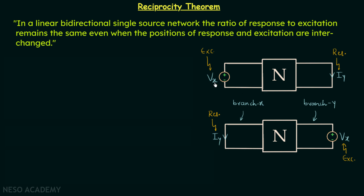In simple words, when we have a linear bidirectional network with a single source, the ratio of response to excitation remains the same when we switch the positions of response and excitation. If V_x in branch X is producing current I_y in branch Y, then V_x in branch Y will produce the same current I_y in branch X.